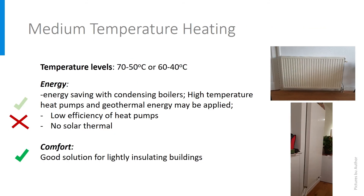Of course, between high and low temperature systems, everything in between is possible. In general, medium temperature is suitable in thermally renovated dwellings that do not achieve new-build insulation levels and in buildings with a little bit of insulation. It enables the use of condensing boilers, which have a higher efficiency, but still consumes fossil fuels. It also allows for the use of ground source heat pumps and medium temperature geothermal sources. However, the efficiency of heat pumps will not be very high and solar thermal cannot be applied. From the comfort point of view, it is an interesting solution in buildings that cannot be insulated easily.